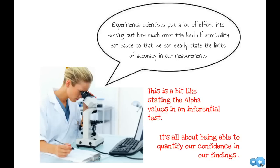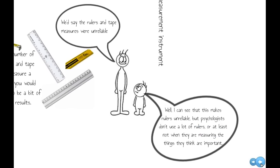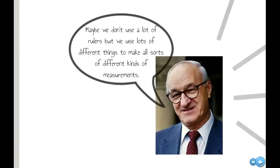Experimental scientists put lots of effort into working out how much error this kind of unreliability can cause, so we can clearly state the limits of accuracy in our measurements. That's a bit like stating alpha values for inferential tests or limits and tolerances of error. It's all about being able to quantify your confidence in your findings. When we're looking at unreliability, psychologists don't use rulers, but they have other ways in which they are unreliable.